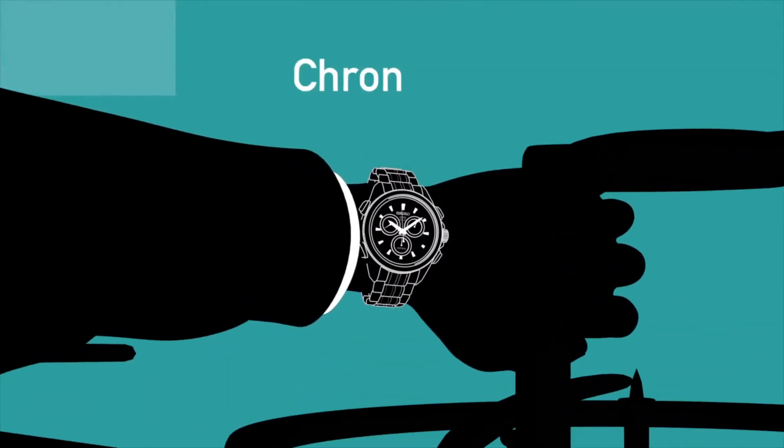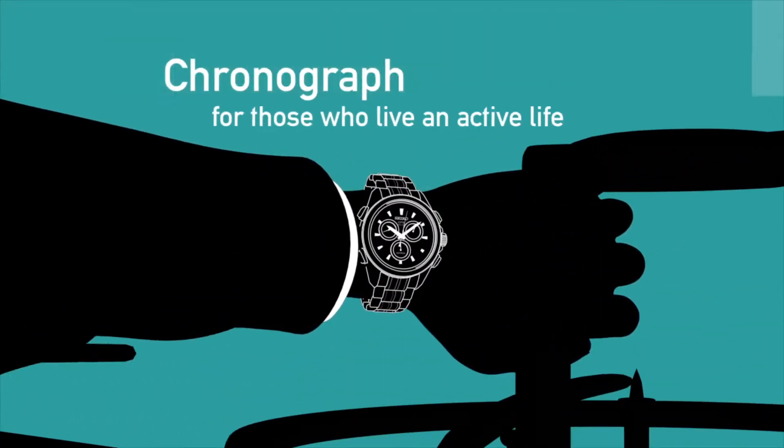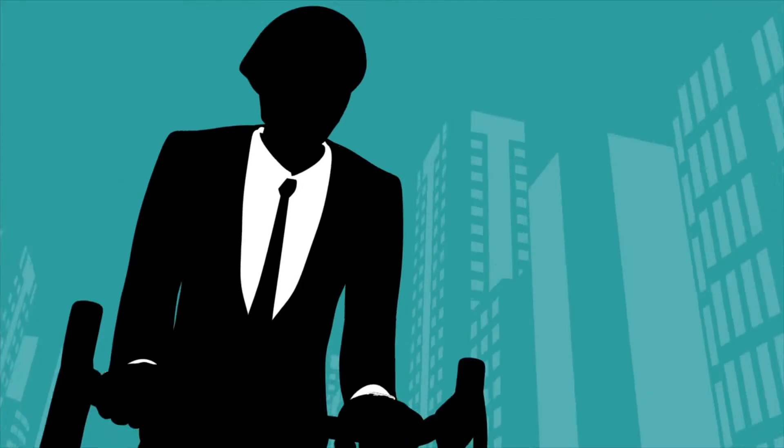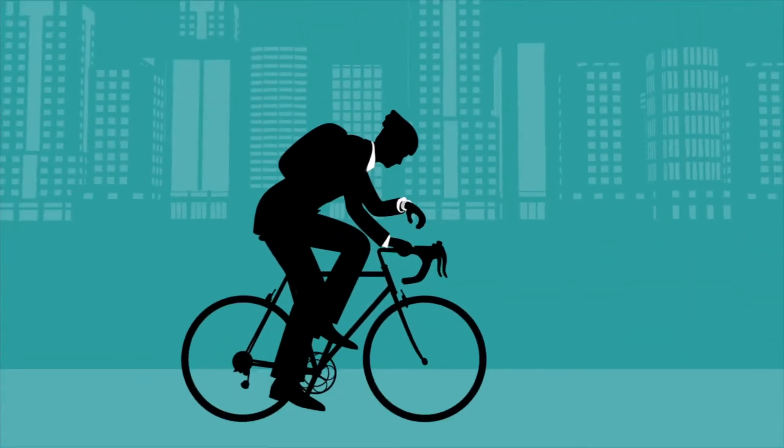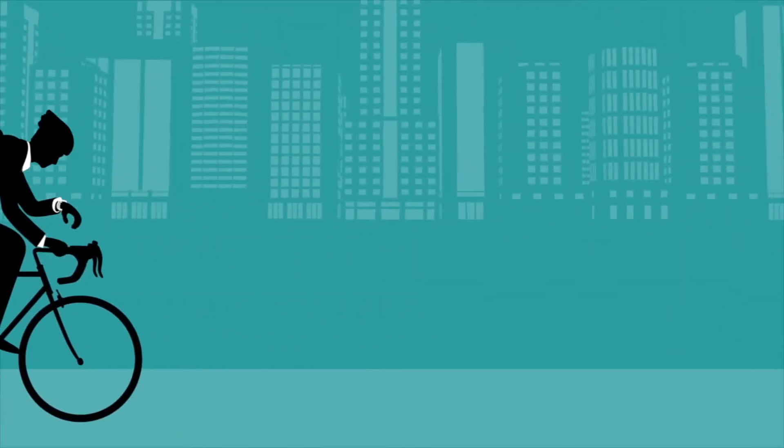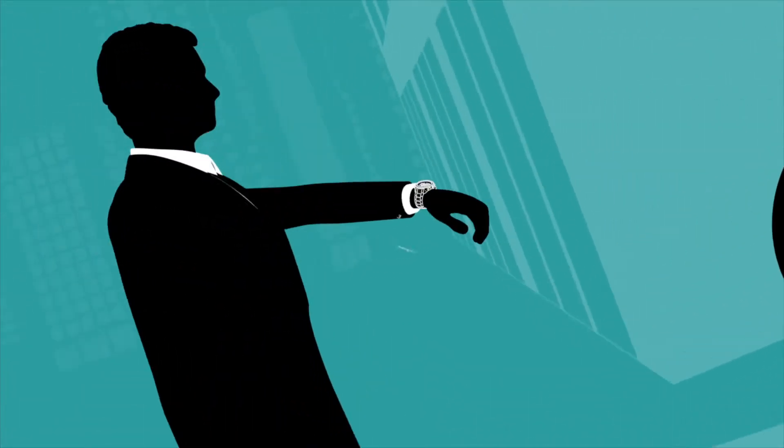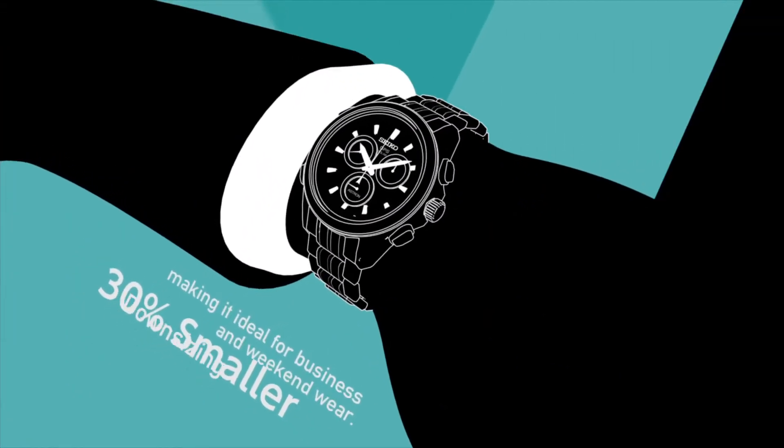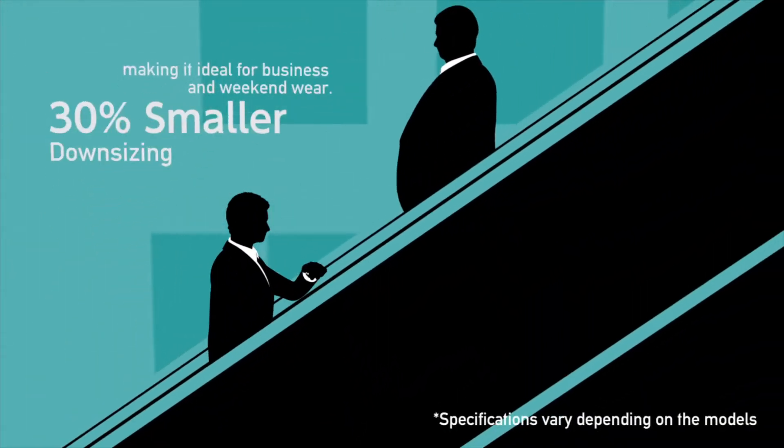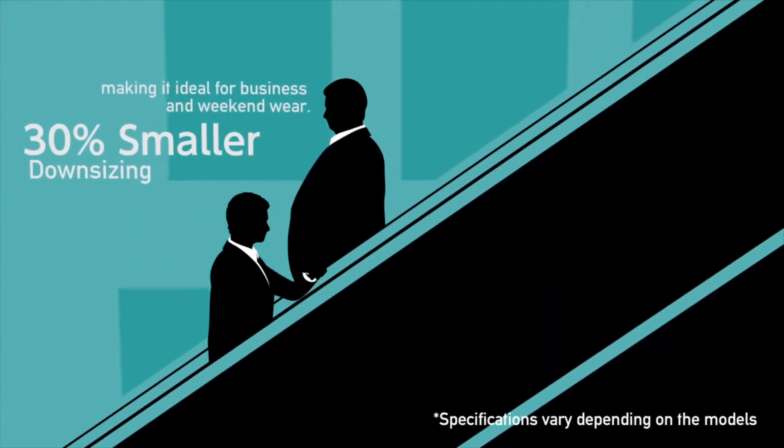The ASTRON 8X series has new functions, including a chronograph, for those who live an active life. And the ASTRON chronograph case is 30% smaller than other ASTRON timepieces and the same size as most mainstream multifunction watches, making it ideal for business and weekend wear.